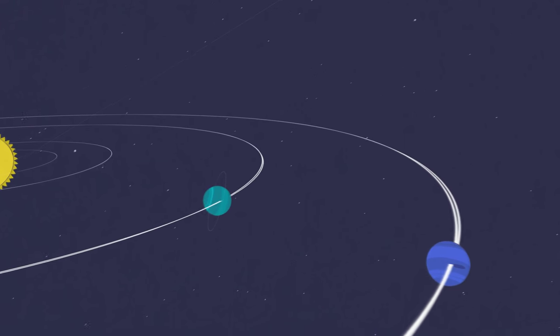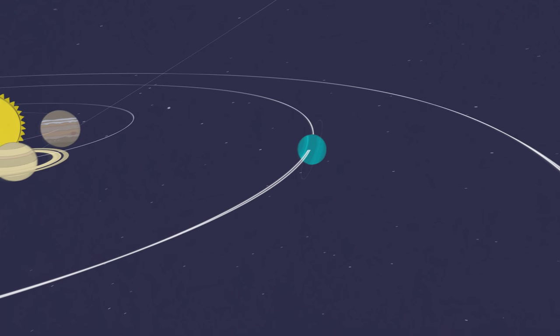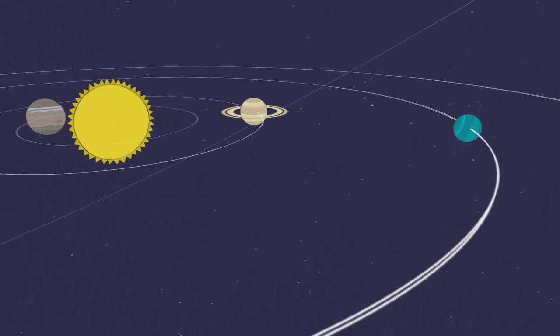A regular planet has a clear path around the sun. Most of those impacts happened billions of years ago, so there's not much left over to get in the way.